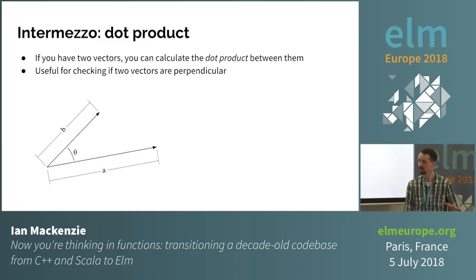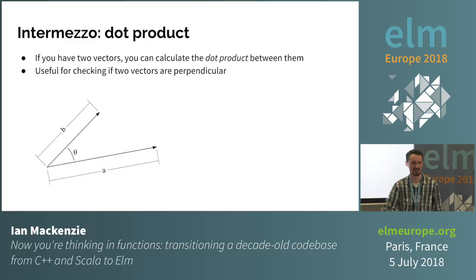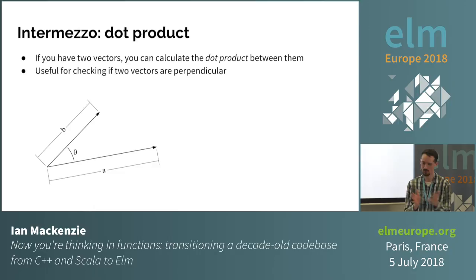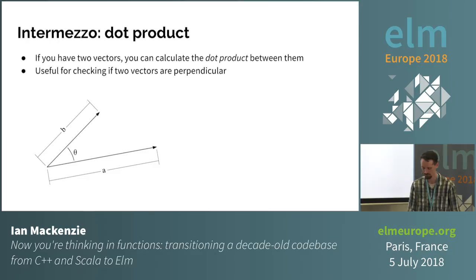Brief interlude: one of the things you can do with two vectors is take the dot product — going back to high school perhaps. If you have two vectors of length A and length B with some angle theta between them, the dot product ends up being A times B times the cosine of theta. Useful for things like checking if two vectors are perpendicular. But you can also do this on two directions. Now if we have a vector dot product function, it doesn't work on directions anymore because it's now a totally different type. So what do we do?